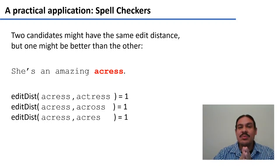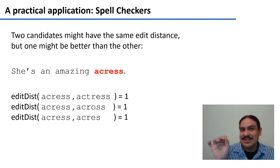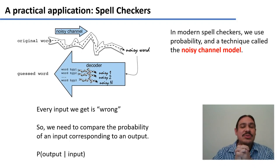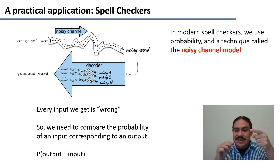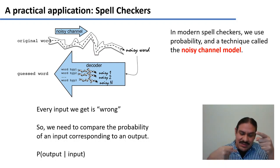How can we decide which one is better? Your human brain is telling you that if it's 'amazing', it's usually an 'amazing actress' and not an 'amazing across' or 'amazing acres'. We're going to use the noisy channel model, which assumes that the input is wrong and that we need to calculate the probability of some correct output given the wrong input — the probability of a correction given the potential error.